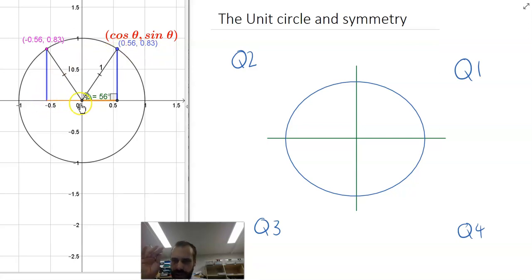Also, notice that this length is equal to this length. These are congruent triangles. Those lengths are the same, yes, but the x-coordinate of the blue dot is 0.56, but the x-coordinate of the purple dot is negative 0.56, because this is in the negative quadrant of the x-axis.